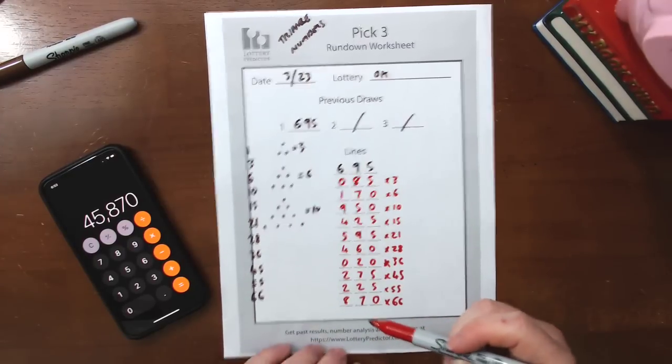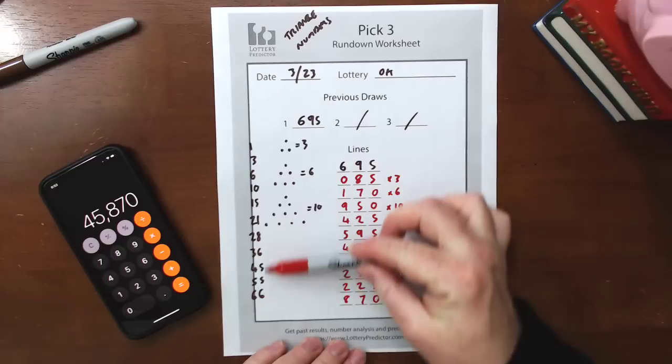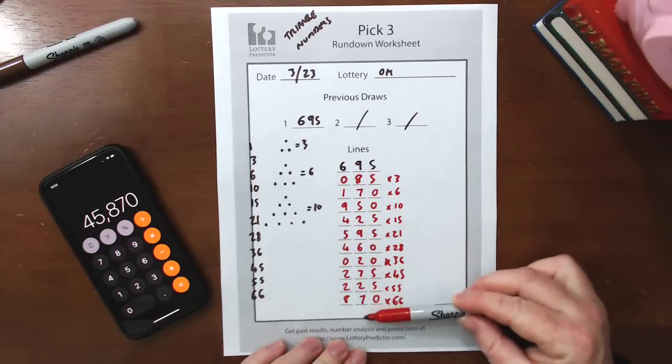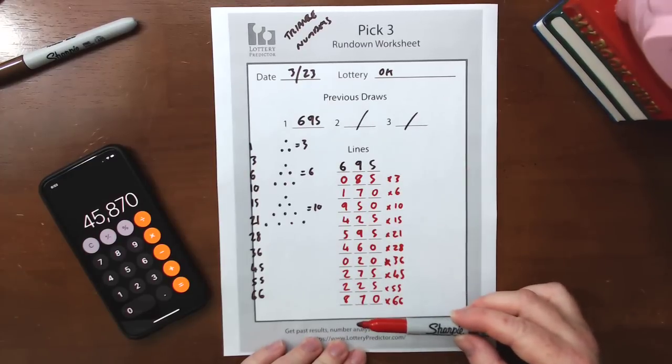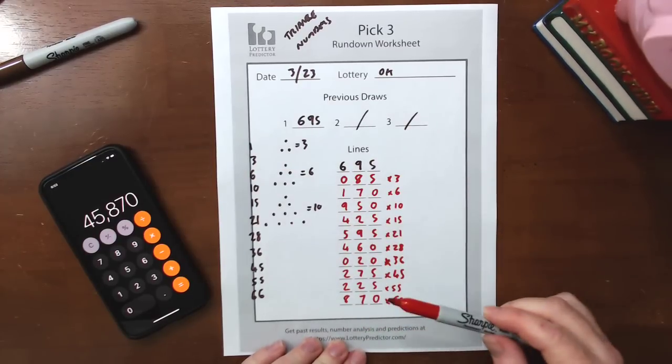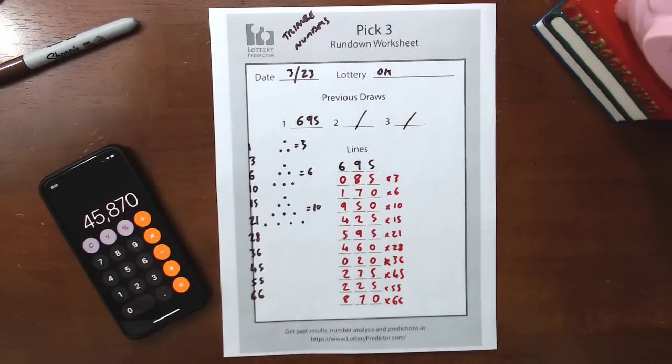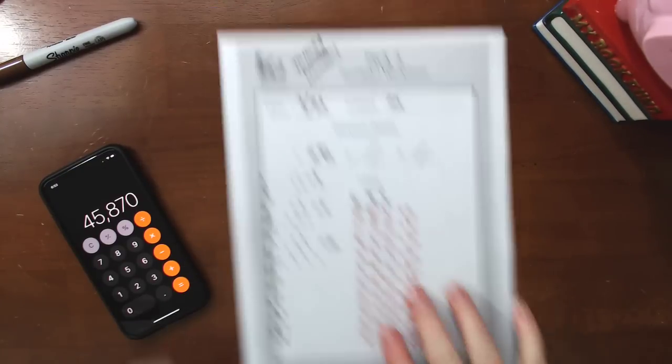So there are 10 numbers influenced by our mathematical series of numbers, the triangle numbers. And these are the 10 numbers that we can start playing. And I said 3 is a powerful number. Triangles are based on 3s. Pick 3 is Pick 3. So hopefully this rundown should work. Give it a try on your state. Let me give you another example of a different state now.